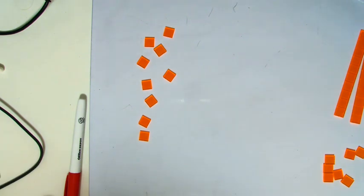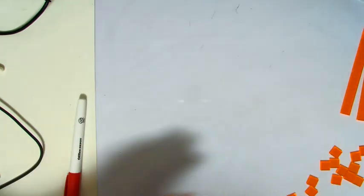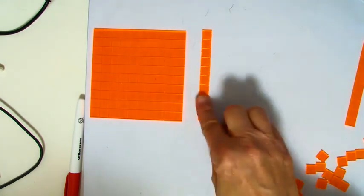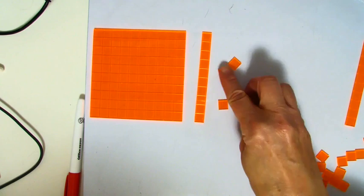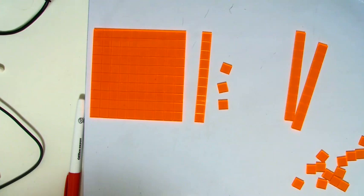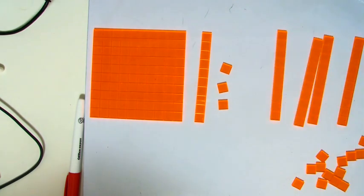Let's do a problem where we have the 100 or the flat. Here I have the 100, and let's say I have 110, and we'll go with three. And I want to take away 42.